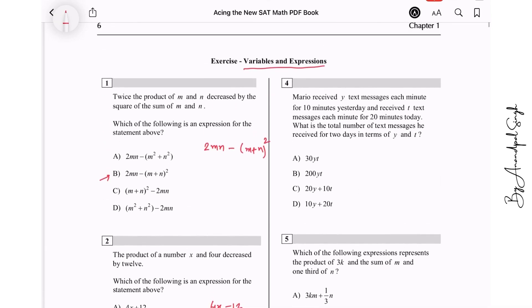Mario received Y text messages each minute for 10 minutes, so 10 times Y, and received T text messages each minute for 20 minutes, so 20 times T. What is the total number of text messages he received in terms of Y and T? Just add the two, it means the answer is 10Y plus 20T.